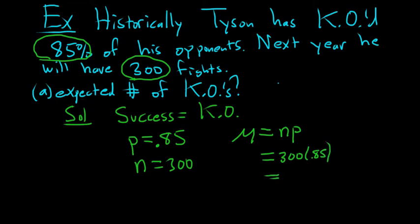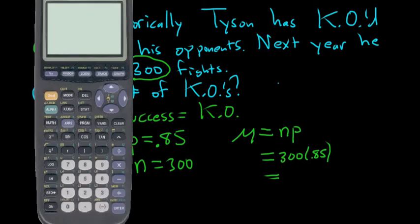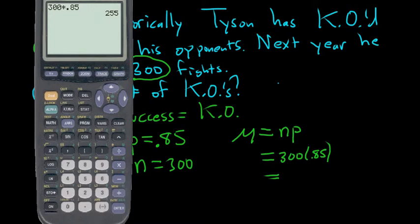So 300 times 0.85. I think this is 255 if I'm doing it right in my head. But I'm not going to be a hero. I'm going to use the calculator. So 300 times 0.85. Good, 255.